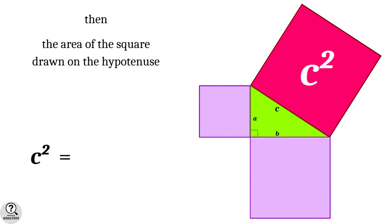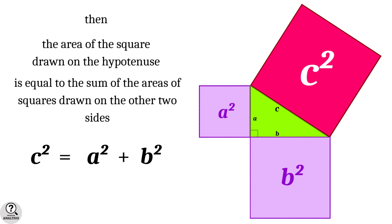Then, the area of the square drawn on the hypotenuse is equal to the sum of areas of squares drawn on the other two sides. That is, c² = a² + b². Proof of the Pythagoras theorem is done using this definition.